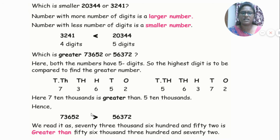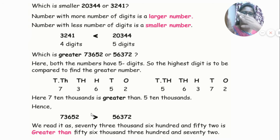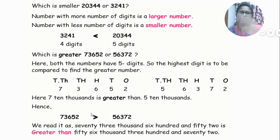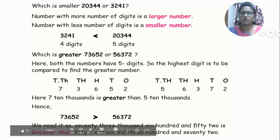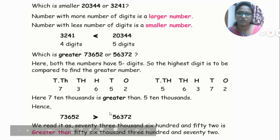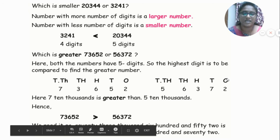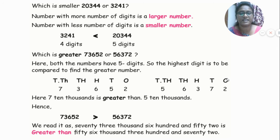The open wide area shows the greater number and the pointed side shows the lesser number. The greater than symbol opens toward 73,652 and the lesser than symbol points to 56,372. So: 73,652 is greater than 56,372.